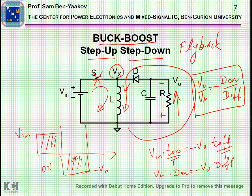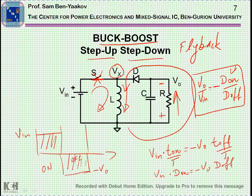Now, since we have a ratio of the two duty cycles, when the duty cycles are, say, 0.5, D on will be 0.5 and D off will be 0.5. The gain will be 1, with the reverse polarity. But if D on is smaller than half, D off will be bigger, resulting in a lower voltage, and vice versa. So this is a very neat converter that allows you to adjust the voltages.